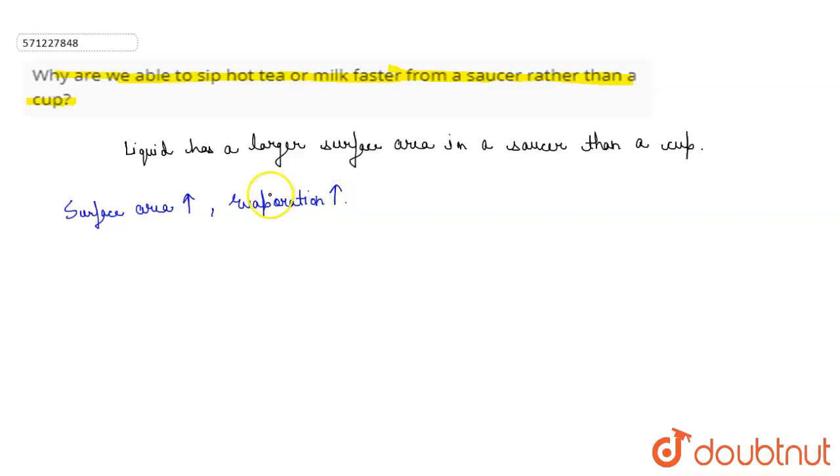Thus, evaporation is faster in a saucer, causing more cooling than in a cup.